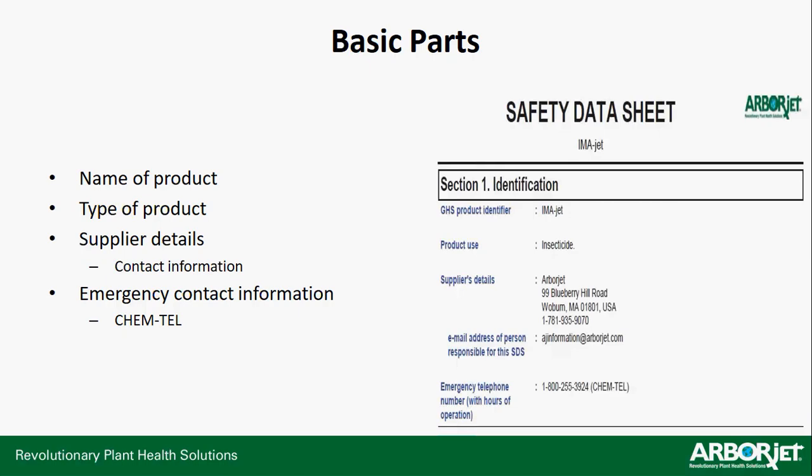The safety data sheet. Basic parts include section one identification: the name of the product — in this case, ImaJet — the type of product (an insecticide), and the supplier details. That's us — we're the manufacturer, located at 99 Blueberry Hill Road in Woburn, Massachusetts. Our phone number is 781-935-9070. There's also an email — our AJ information email — that reaches a number of people in the office. As well as emergency contact information: if there's an accident, whether you drop your QuickJet needle first onto your foot and it pierces your shoe, or a hose breaks on your Tree I.V. and you get squirted.